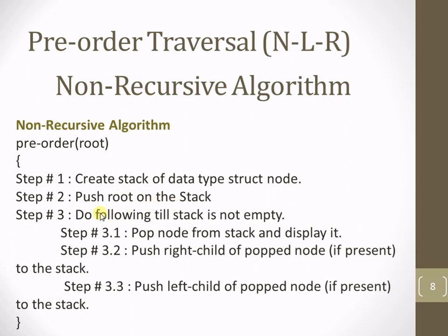Very first, we need to push the root node onto the stack. Then we need to follow all these steps in sequence while our stack is not empty. If the stack is empty, we stop. Inside the while loop, the first step is to pop the node from the top of the stack and display it. After that, we need to push the right child of the popped node if it is present, and then push the left child if it is present.